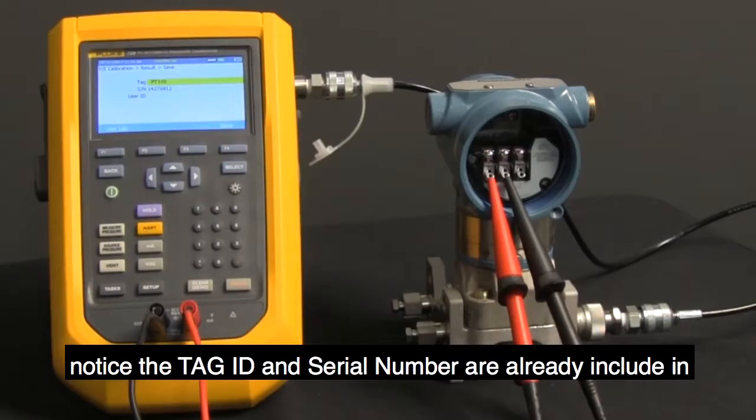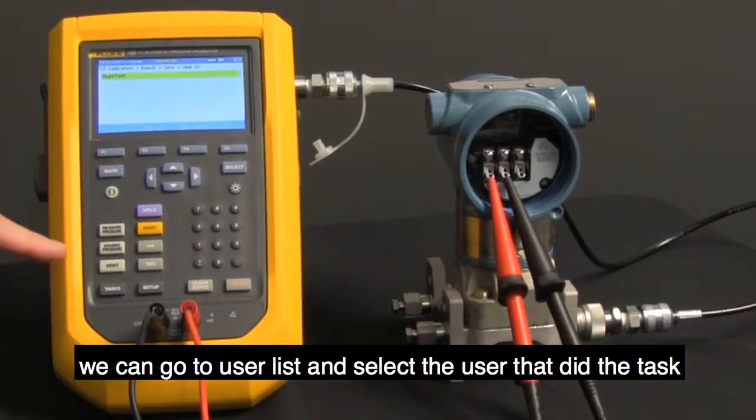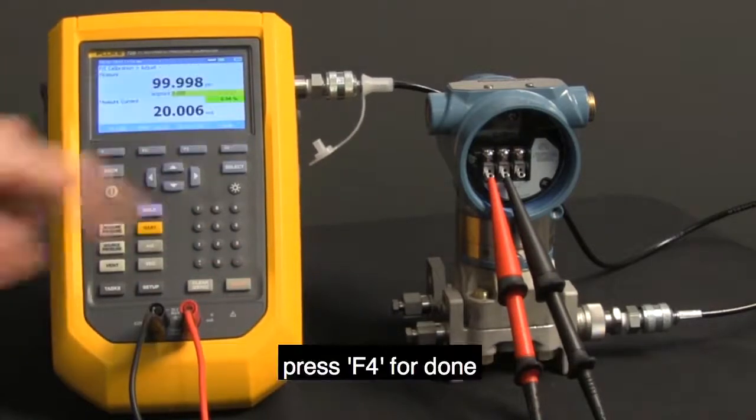Notice the tag ID and the serial number are already included. It knows that from the task and verified by the HART communication. We can go to user list and select the user that did the task, press F4 for done.